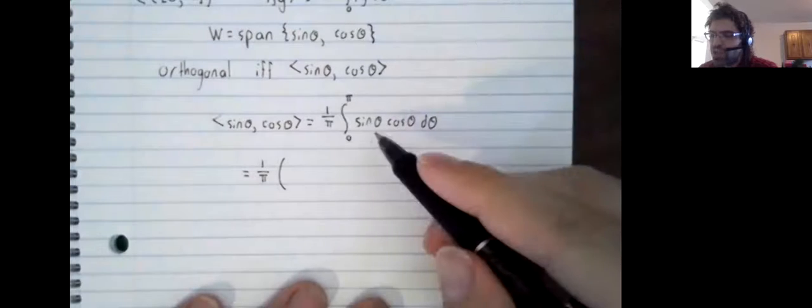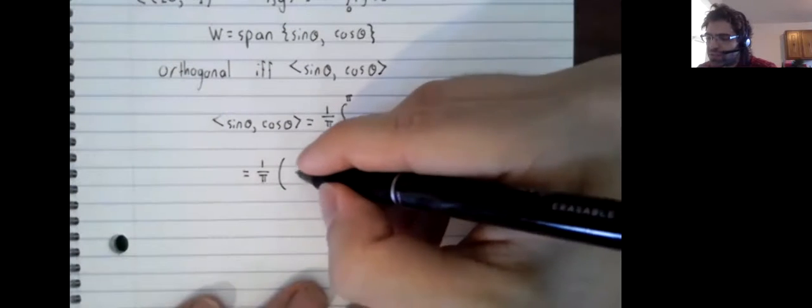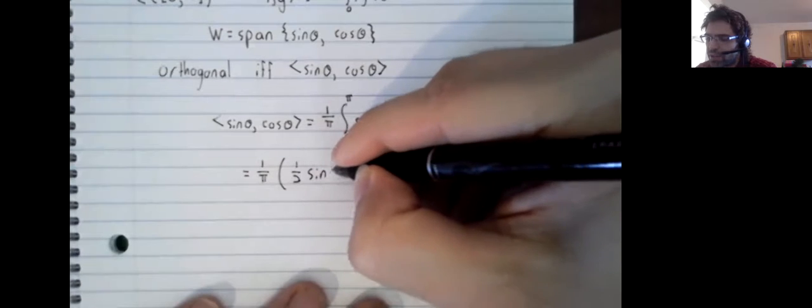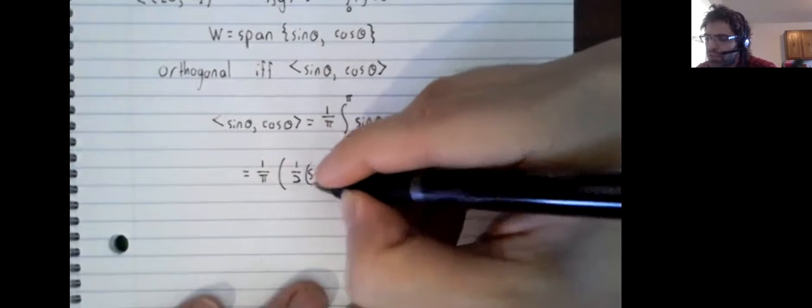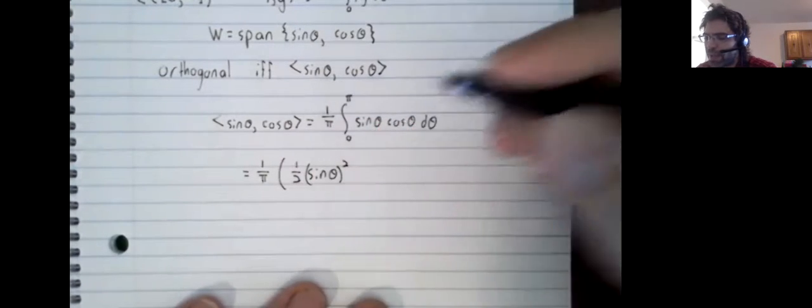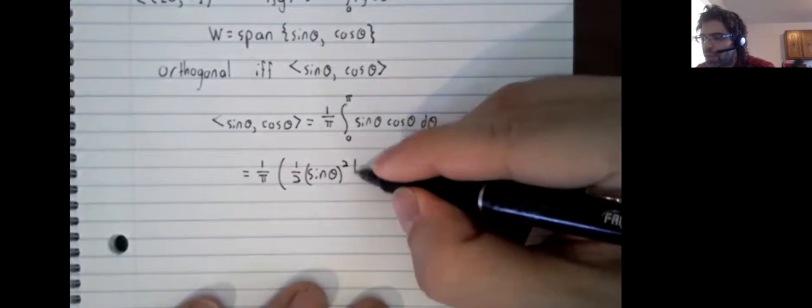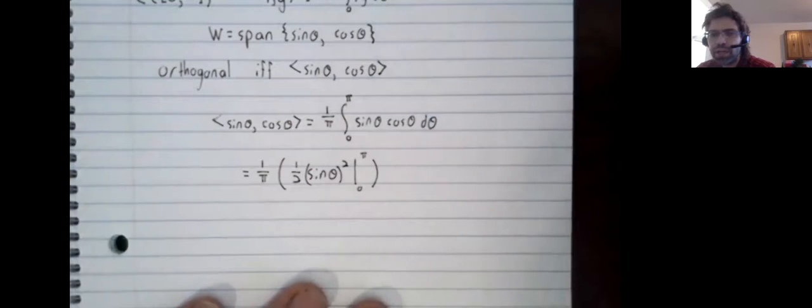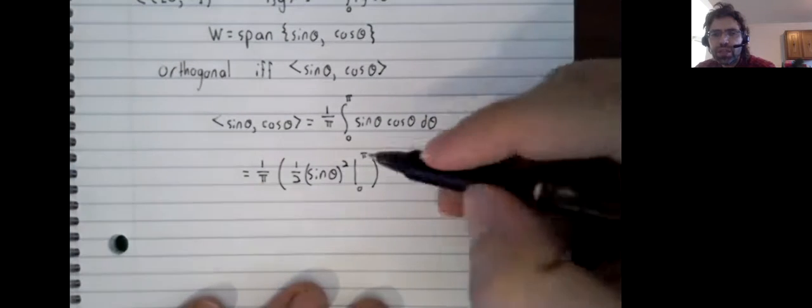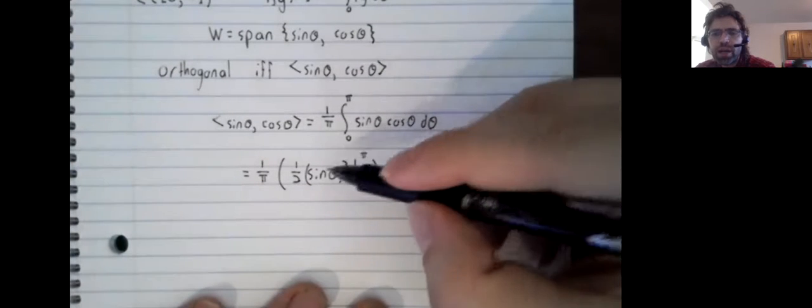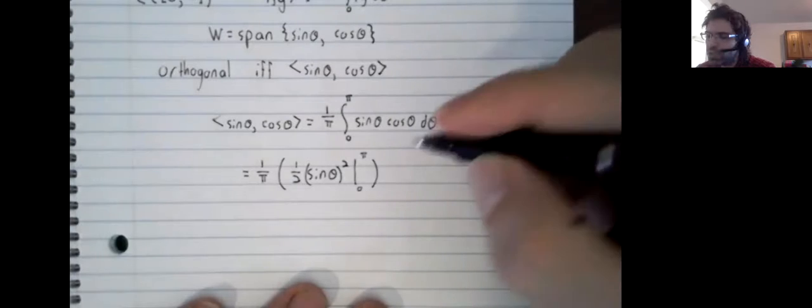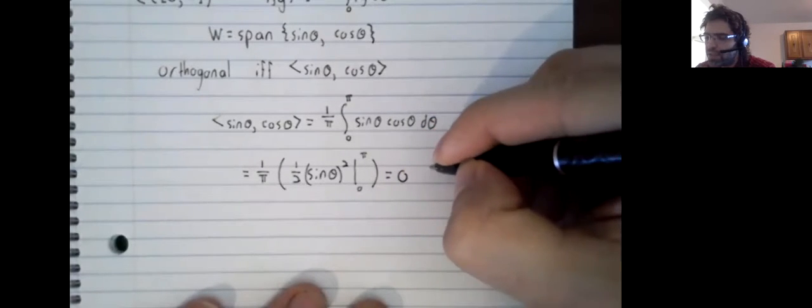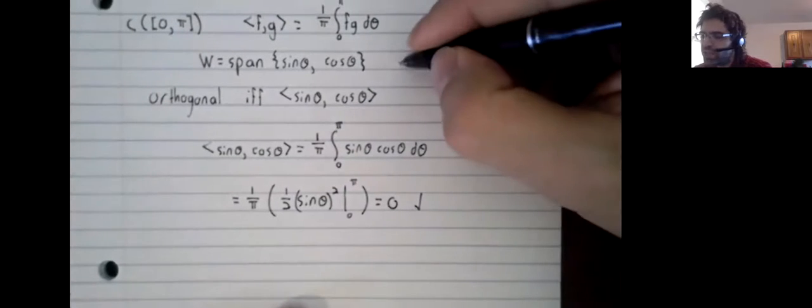The anti-derivative of this is one half times sine of theta squared, evaluated from zero to pi. The sine of pi is zero, the sine of zero is zero. This is indeed zero.